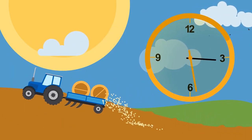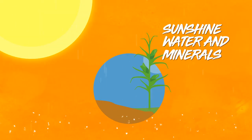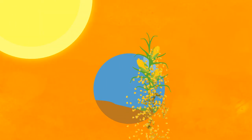After months of care, with the right amount of sunshine, water, and minerals, the bright yellow corn is harvested.